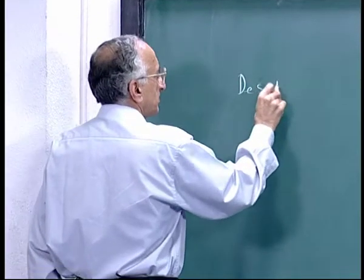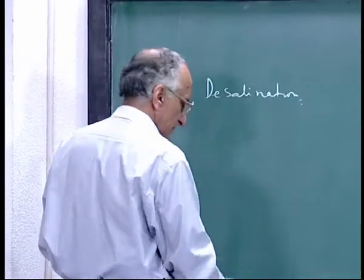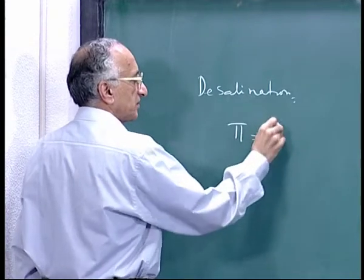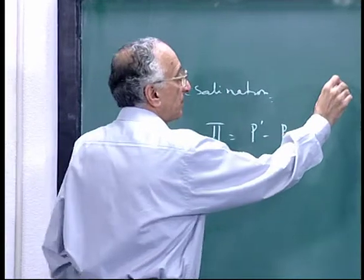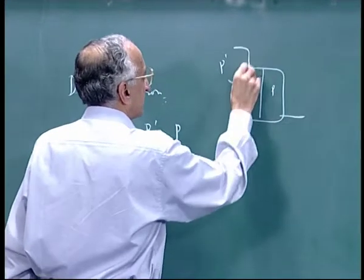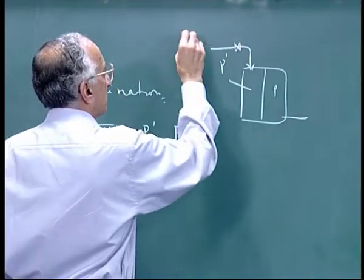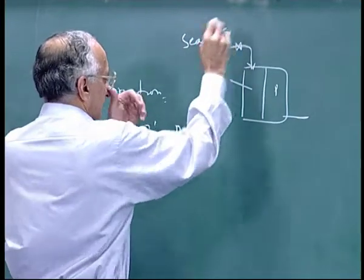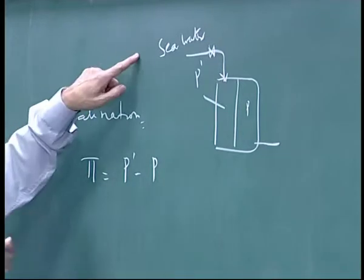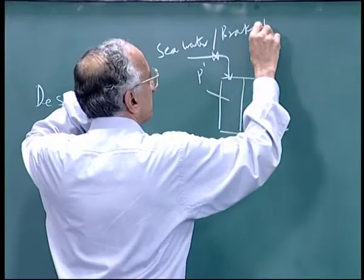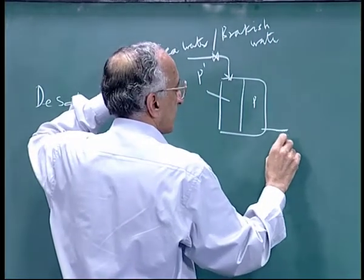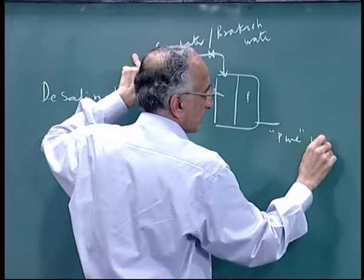We are discussing desalination. I told you that the osmotic pressure, which is P prime minus P, this is your system. As I said, the membrane units here, reverse osmotic units here, do not use pure water, they use brackish water.